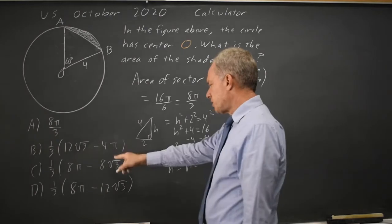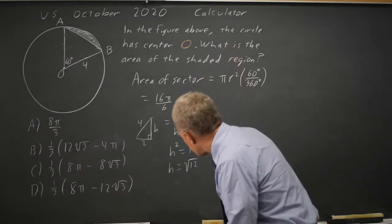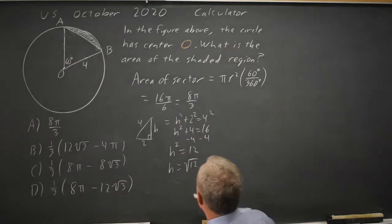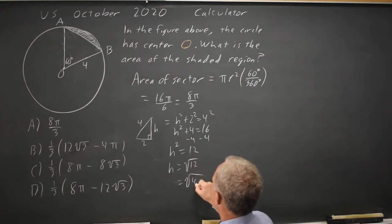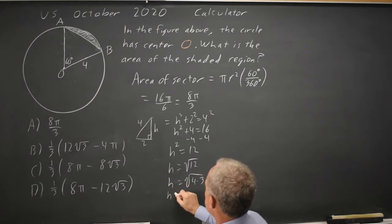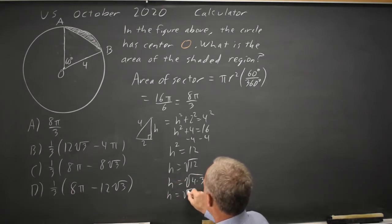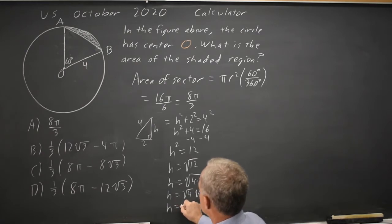Our answers don't have root 12 — they have root 3. So I'm going to write root 12 as root 4 times 3. That means h equals root 4 times root 3, which simplifies to 2 root 3.